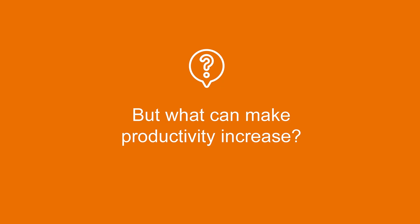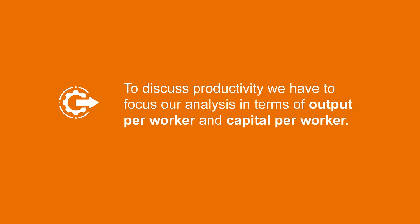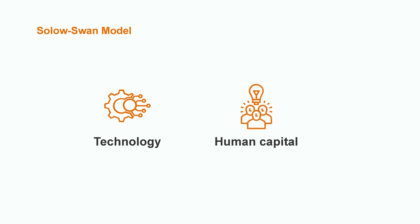This model was essential for us to establish productivity's role in economic growth. But what can make productivity increase? In order to discuss productivity, we have to focus our analysis in terms of output per worker and capital per worker. The long-run growth of an economy can change the scale of operations by adjusting the level of inputs that are fixed in the short run. An adjustment in input that leads to a higher output per worker stands for an increase in productivity. So which inputs can be adjusted? Technology or human capital?